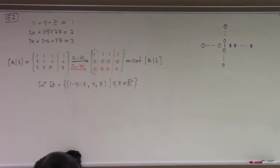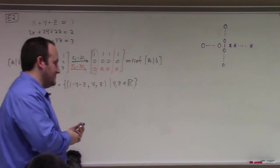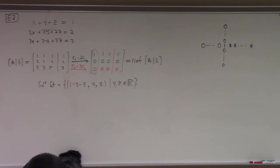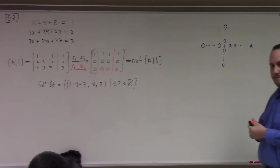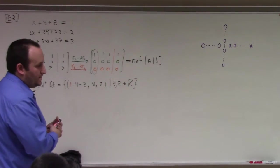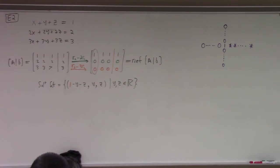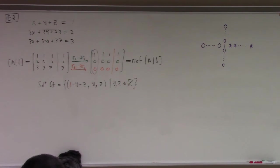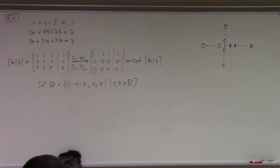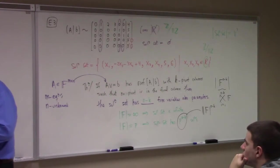Student: Would it be more correct to say the cardinality equals the cardinality of F to the N minus K? That would handle the infinite case too. Instructor: Yeah, but then people will ask what infinity to the N minus K means, and I don't want to talk about that. You could say F to the N minus K — like the N minus K fold Cartesian product of F. That would naturally include the infinite case as well. Yeah, nice.